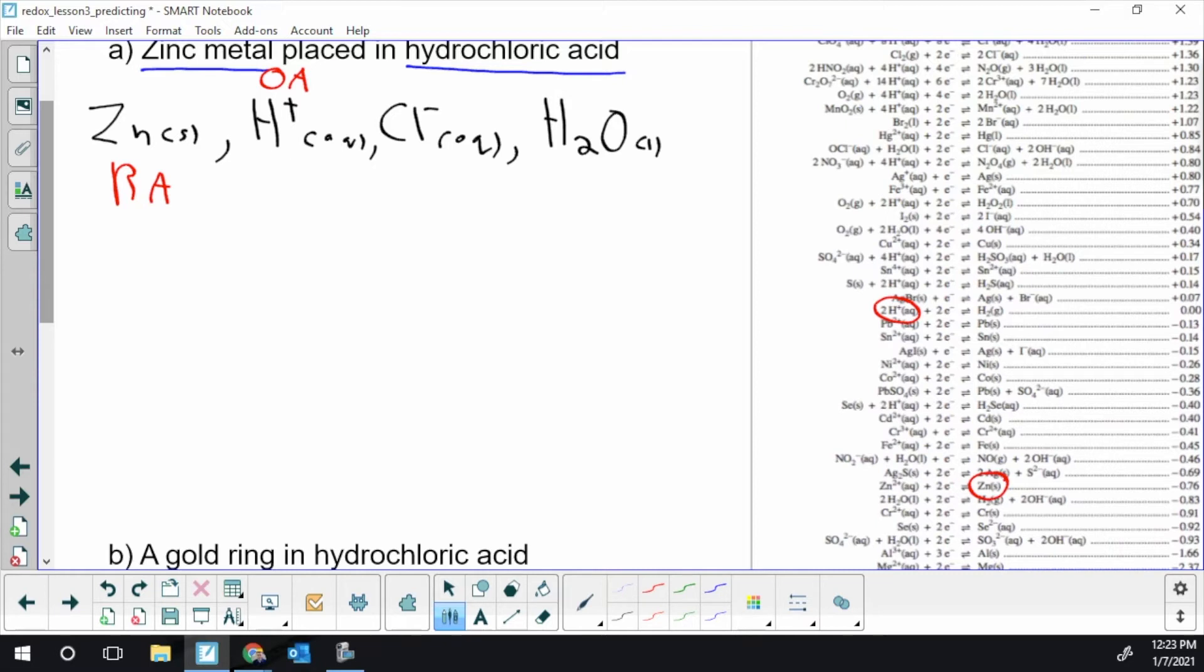And one of the few things that H plus isn't paired with is water. But this is where you definitely need to slow down. Next, we get to chloride. There's chloride all by itself. And all the iides, the chloride, bromide, iodide, are all RAs.